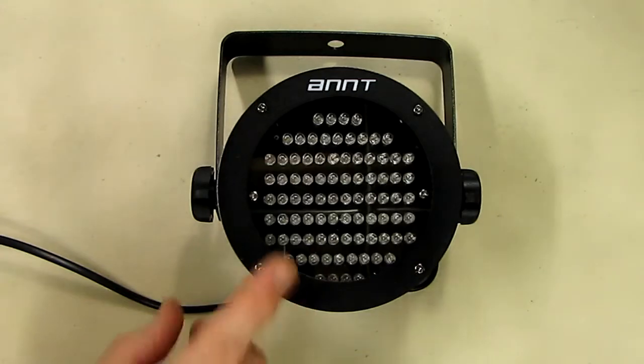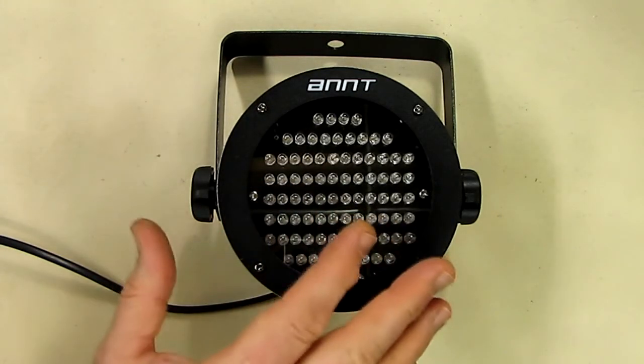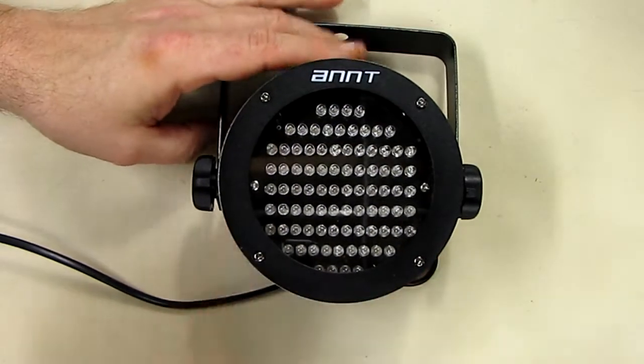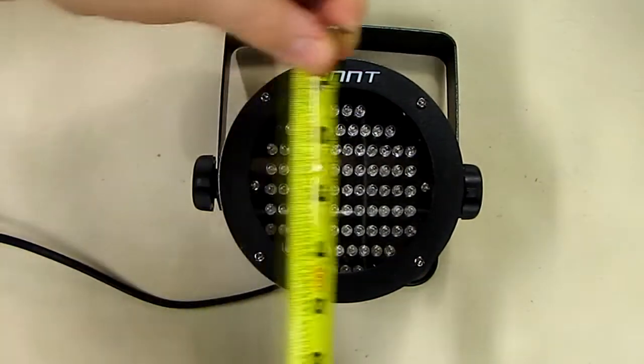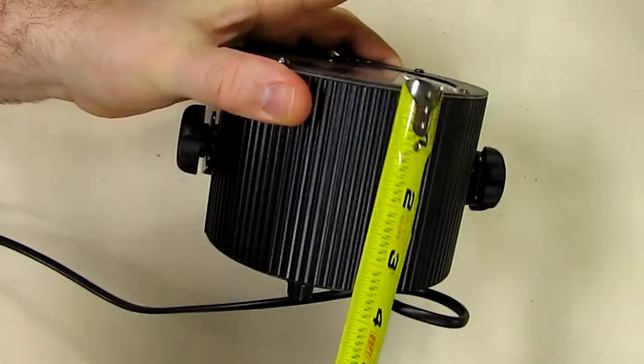Right now I have it on the sound activation mode so that I can play music and it changes the colors based on that. It's a nice looking unit, it's relatively small and compact, it's about five inches in diameter and a width of about three and a half inches.